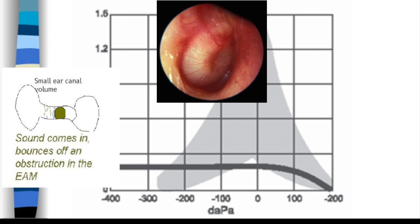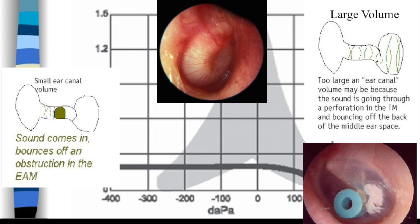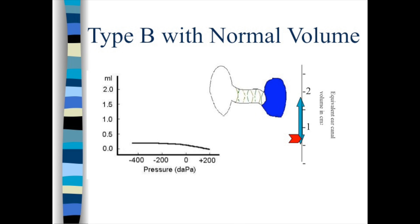A flat tympanogram could also be from cerumen impaction, perforated tympanic membrane, stenosis of the ear canal, connective tissue formation around the ossicles, scarring or thickening of the eardrums, normal working tympanic membrane tubes, cholesteatoma, or middle ear tumor. A good otoscopic examination combined with the ear canal volume can help you with your differential diagnosis.